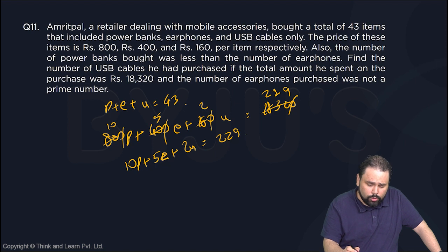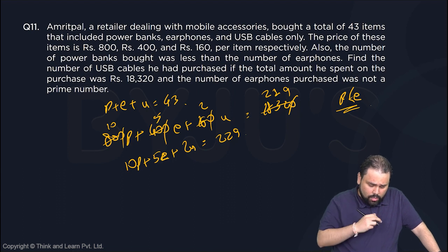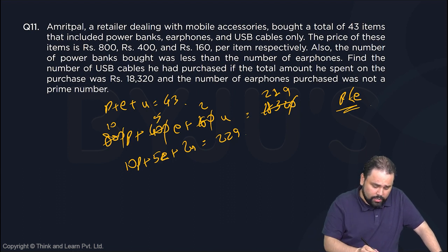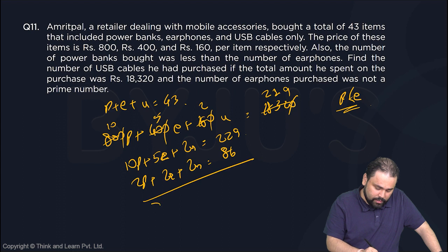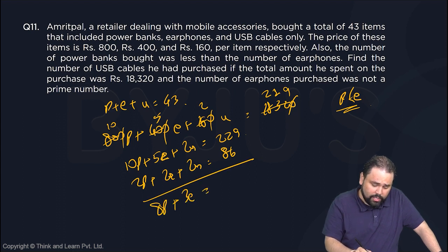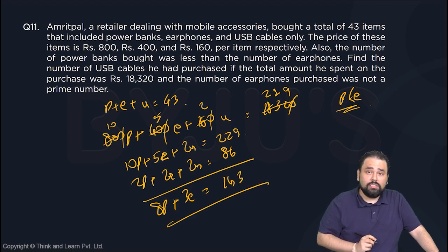We also have that the number of power banks was less than earphones, so P is less than E. If I multiply the first equation by 2, I get 2P plus 2E plus 2U equals 86. Subtracting from the price equation: 8P plus 3E equals 143. Keep that in mind.